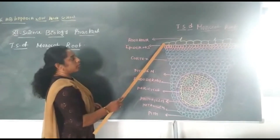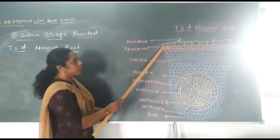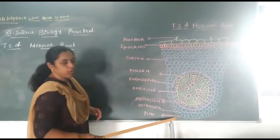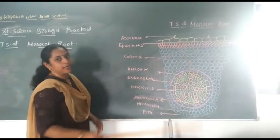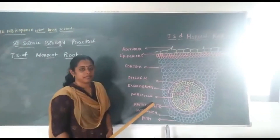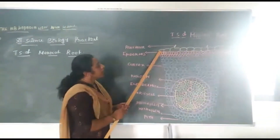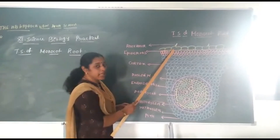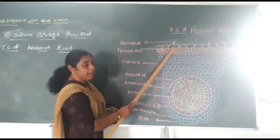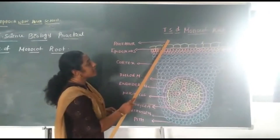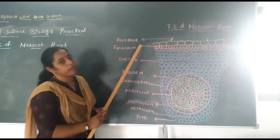The outermost layer of the Monocot Root is called Epidermis. In this diagram I have represented Epidermis with yellow color. Epidermis consists of a single layer of parenchyma cells. From the Epidermis you can find some outgrowth, which is called root hair, responsible for absorption of water from the soil.